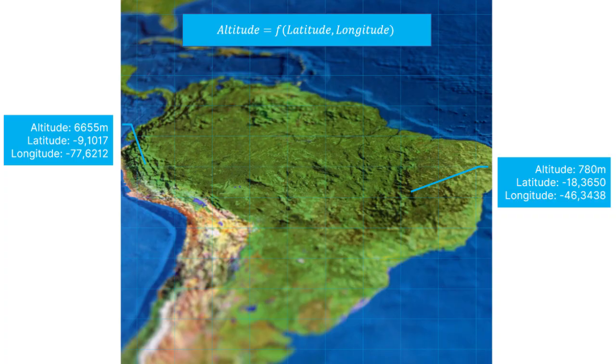But what exactly is an aeromap, and what on earth do maps have to do with race cars? Well, in general terms, a map is a tool to store and visualize the relationship between different parameters, like the altitude of a terrain in function of the longitude and latitude.